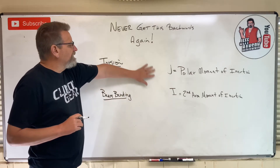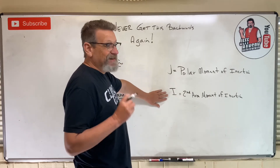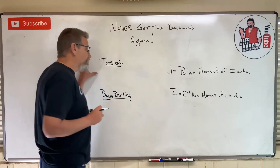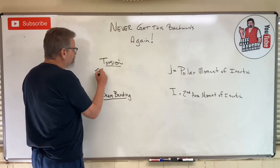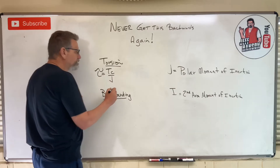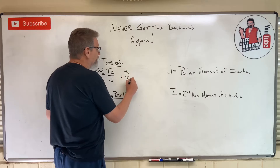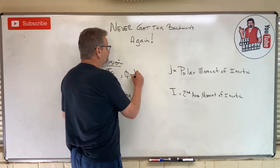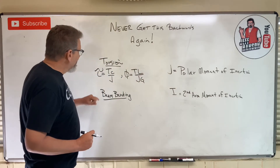The two things that cause confusion are J, the polar moment of inertia, and I, the second area moment of inertia. In the torsion chapter we saw that shear stress equals Tc over J, and that phi, the angle of twist, equals TL over JG.